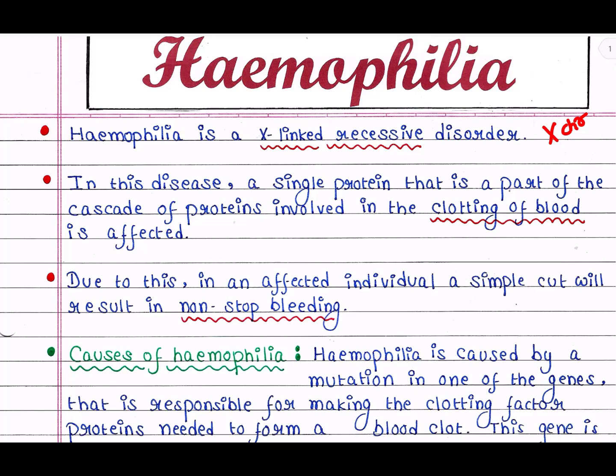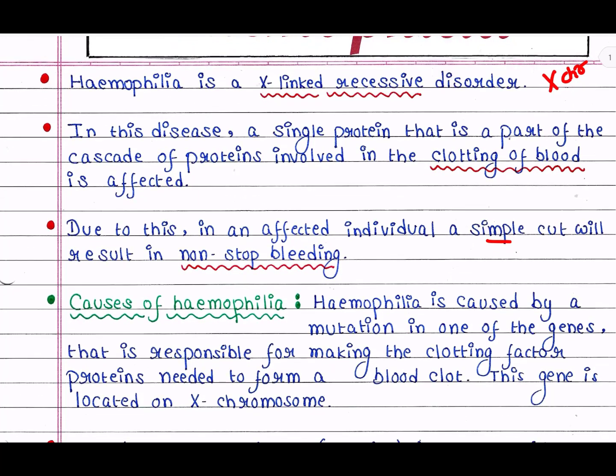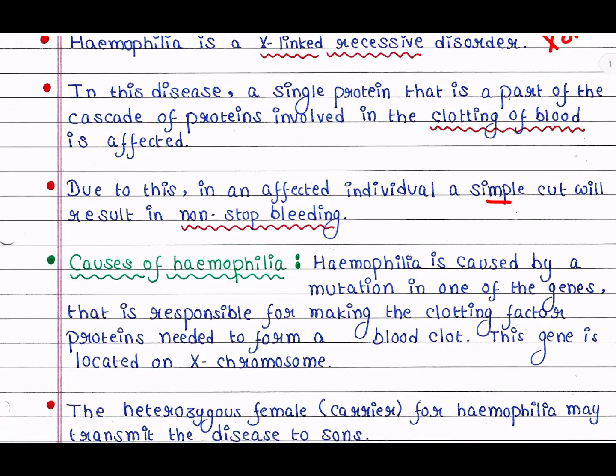Due to this, in an affected individual a simple cut will result in non-stop bleeding, which is dangerous. Hemophilia is caused by a mutation in one of the genes responsible for making the clotting factor proteins needed to form a blood clot. This gene is located on the X chromosome.